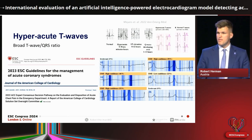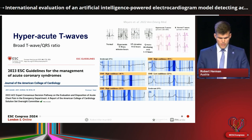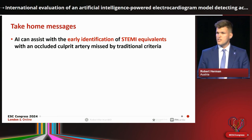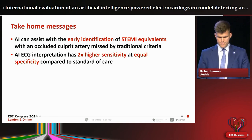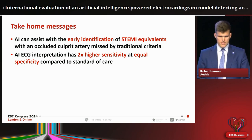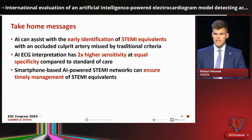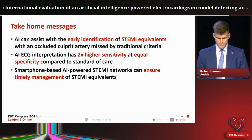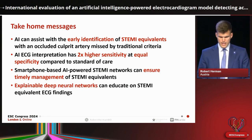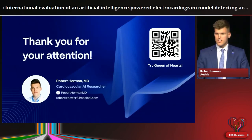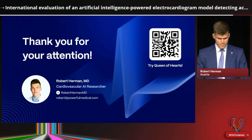AI can help us identify patients with these STEMI equivalent ECG features. To summarize: AI can assist with the early identification of STEMI equivalents with an occluded culprit artery that are frequently missed by traditional criteria. AI ECG interpretation has two times higher sensitivity at equal specificity compared to standard of care, and a smartphone-based AI-powered STEMI network can ensure timely management. Explainable deep neural networks can educate us on STEMI equivalent ECG findings and go beyond human understanding of the ECG. Thank you.